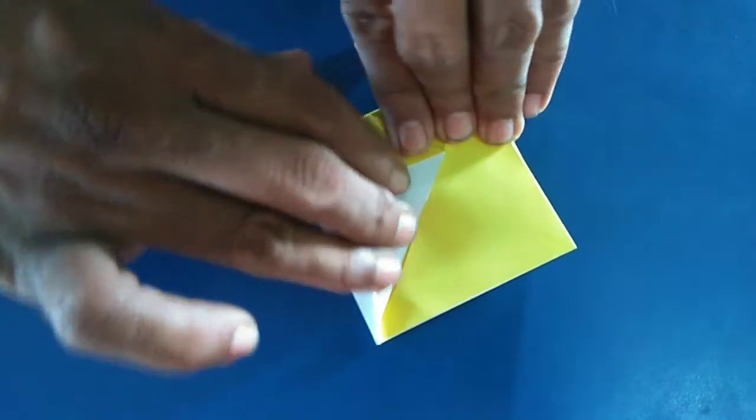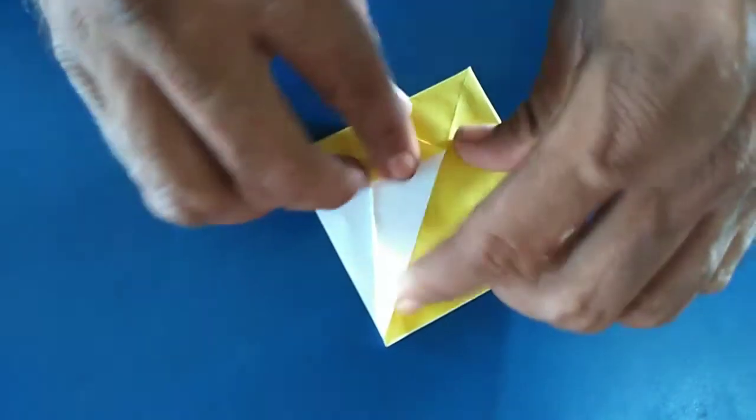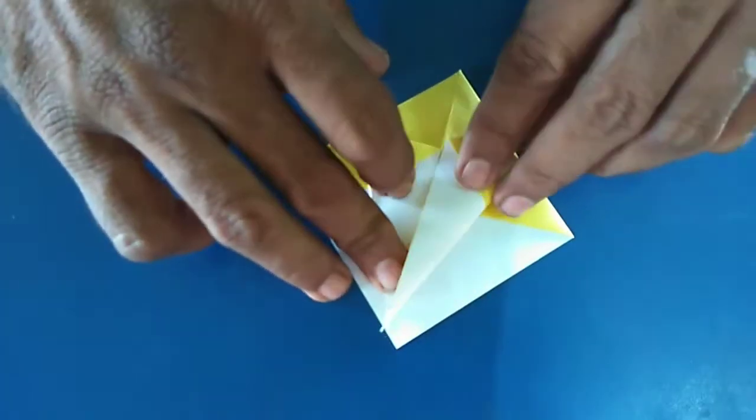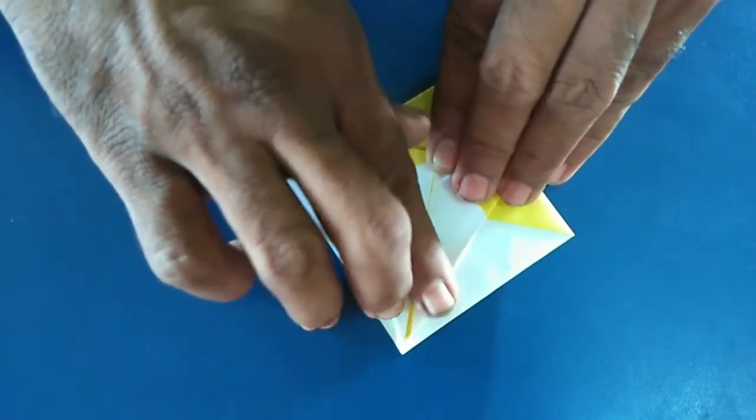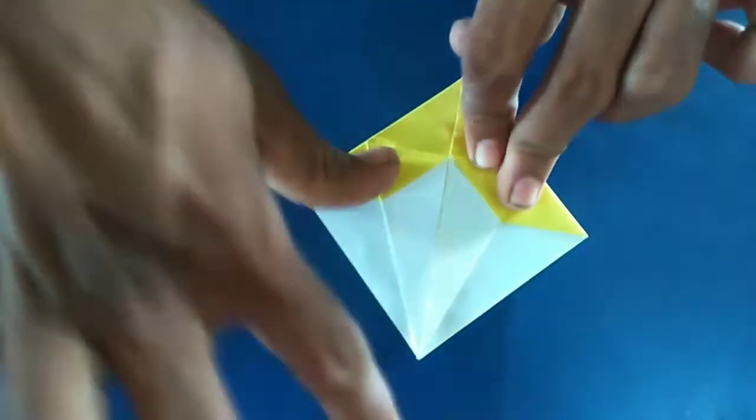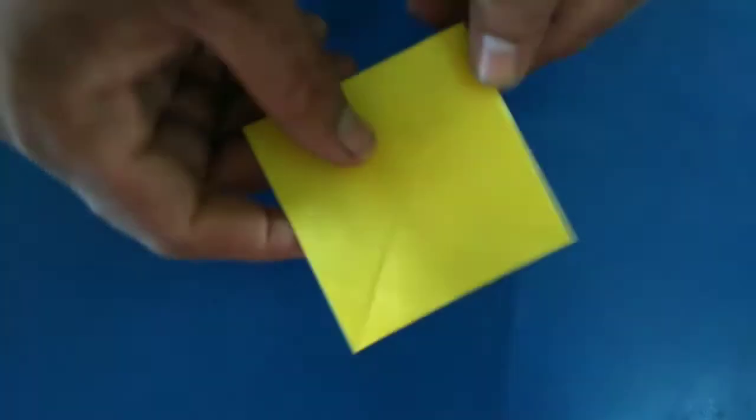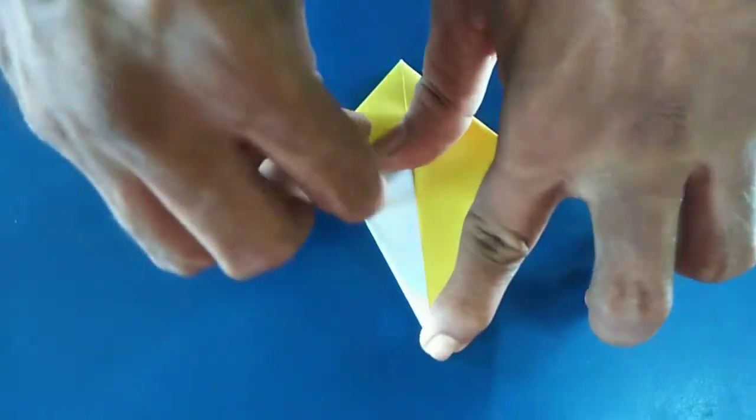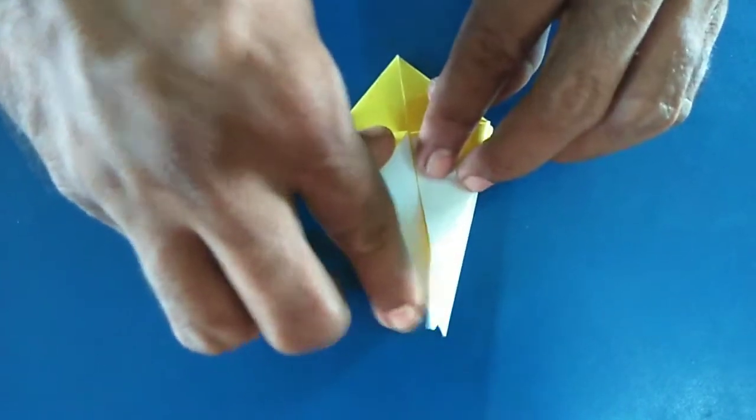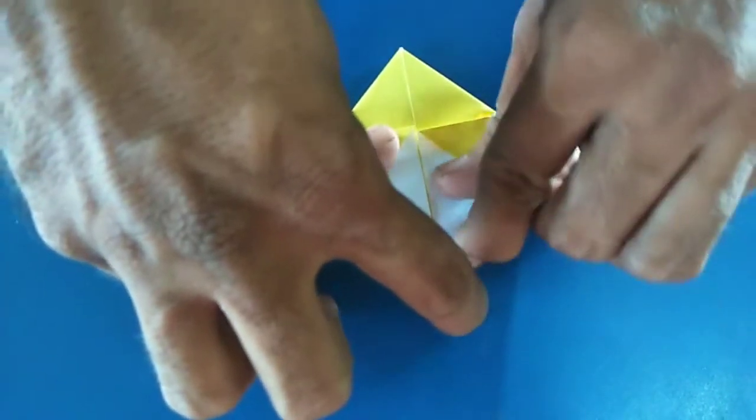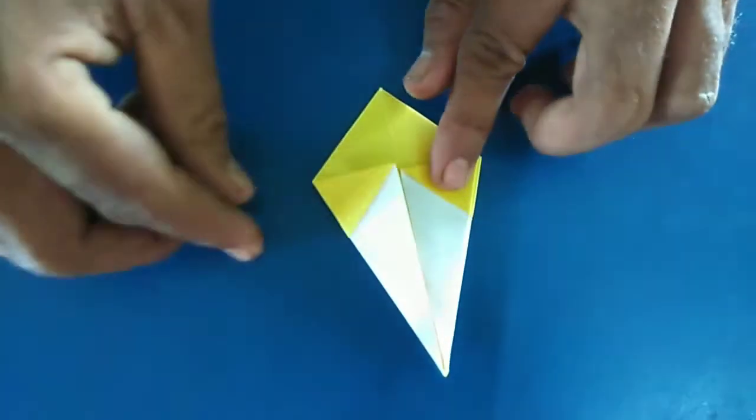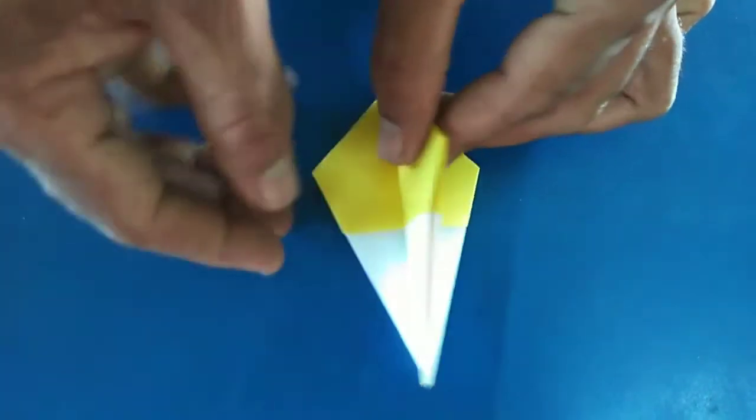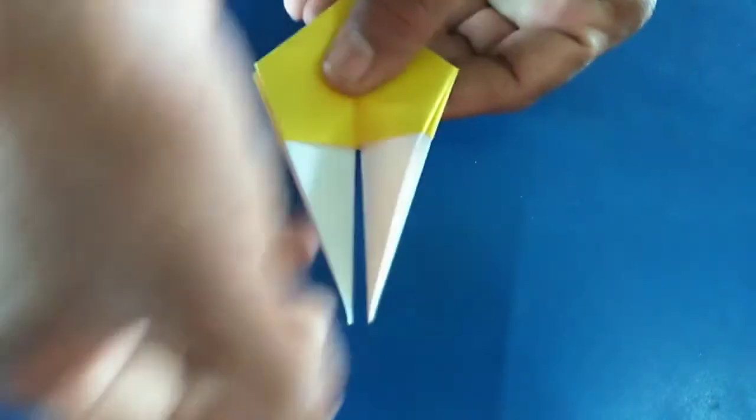This side corner you have to take and fold on that line. Here also do the same. This side also do the same. Now fold it back. Side have to take and fold. Make the same fold. We got the diamond shape. Press it properly and take this both upper side and other side also do the same.